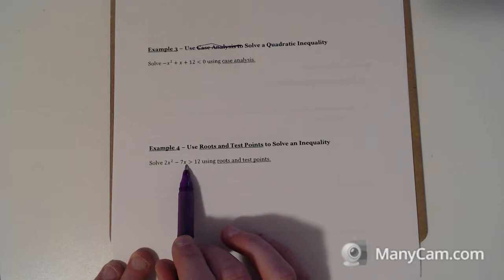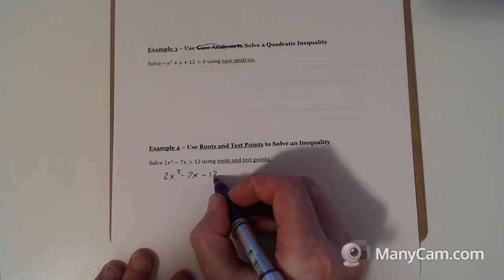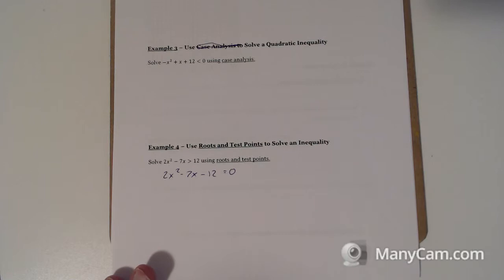Okay, roots and test points. So we want to find out when 2x squared minus 7x is greater than 12. We don't want to factor this expression by itself because if we factor, we're only going to find out the points where it equals 0. So what we want to do is actually move everything to one side.